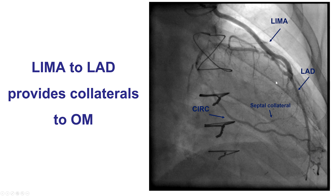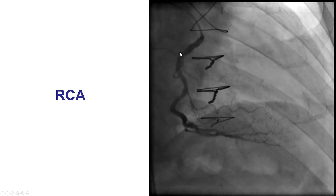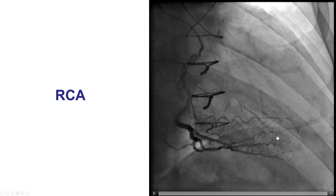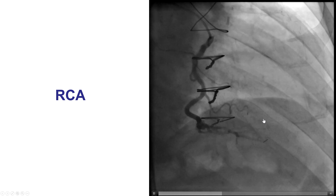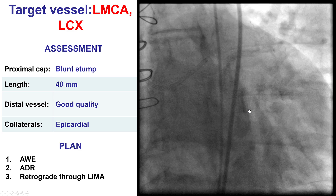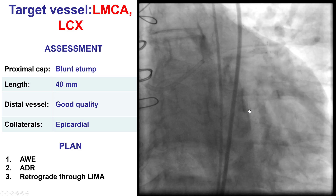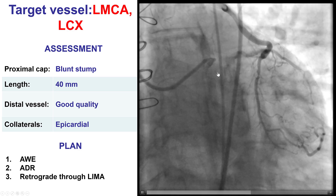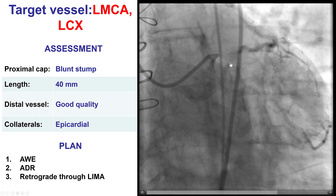So we have the LIMA-to-LAD, epicardial collaterals to the obtuse marginal branch, and CTO of the circumflex and the left main. The right coronary artery was patent and was also providing some epicardial collaterals to the distal circumflex. Therefore, the culprit lesion for the patient's angina was the CTO of the circumflex.